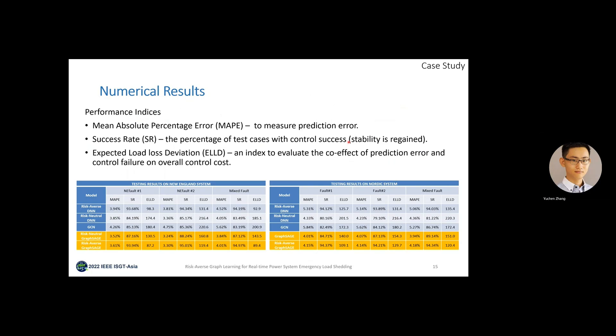Next is the case study. We have tested the proposed emergency load-shedding method on two benchmark power systems, which are the New England 39 bus system and the Nordic 41 bus system. In both systems, we have replaced some coal-fired plants into wind farms to increase the renewable penetration.